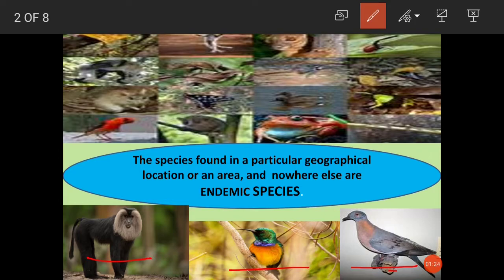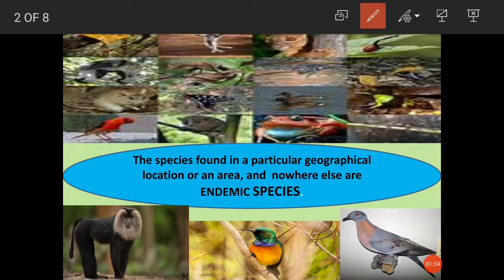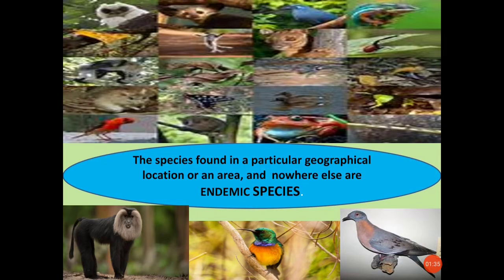These endemic species are highly adapted to their home range. Slowly and slowly, children, these endemic species are becoming extinct, and the reasons could be many — like pollution, natural disasters, or directly or indirectly human actions.